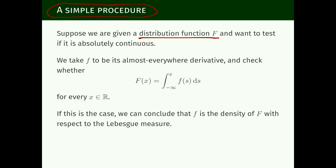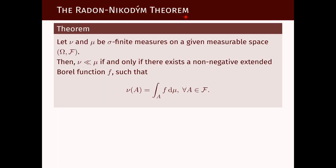We are given a distribution function F, and we want to test if F is absolutely continuous. What does it mean to be absolutely continuous? It means if we define the measure mF on the sample space — the real line with the Borel sets — we want to know if this measure is absolutely continuous with respect to the Lebesgue measure, which, by the Radon-Nikodym theorem covered in the previous video lecture, is the same as having a density.